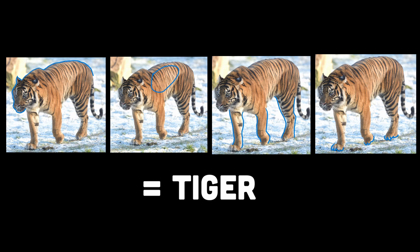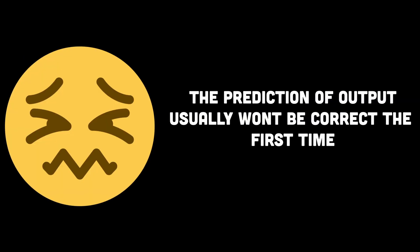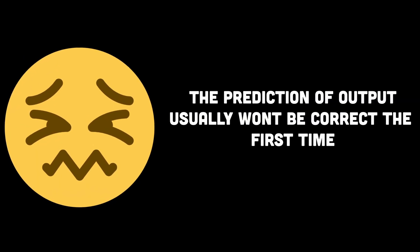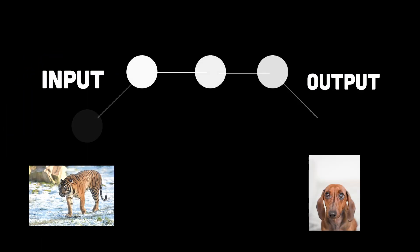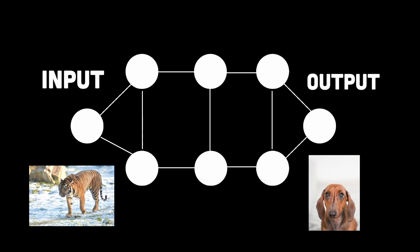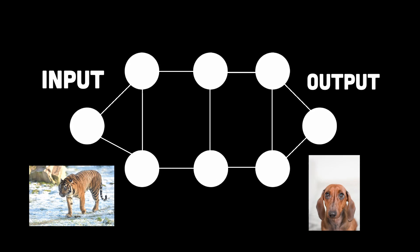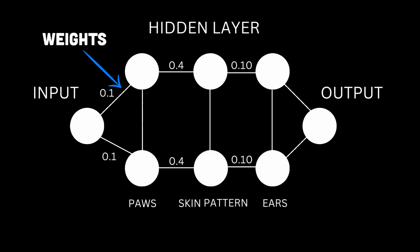When the input is supplied and the training of our neural network begins, there's always a chance that the output may not give the correct prediction based on the input label. The main reason for that is those links that connect between the nodes or neurons of our layers — these links are called weights, and they help us determine how much impact each node has on the input.